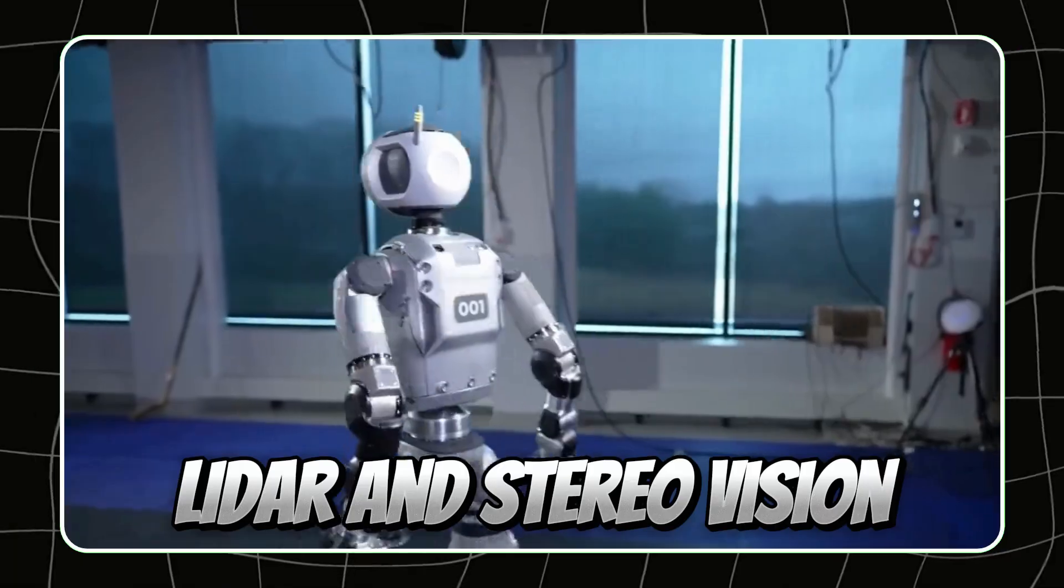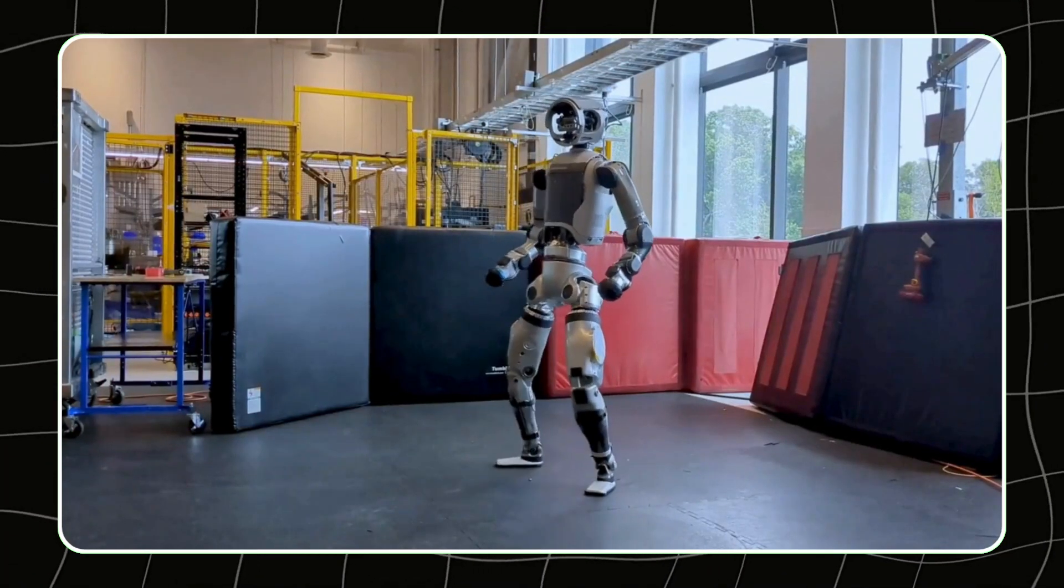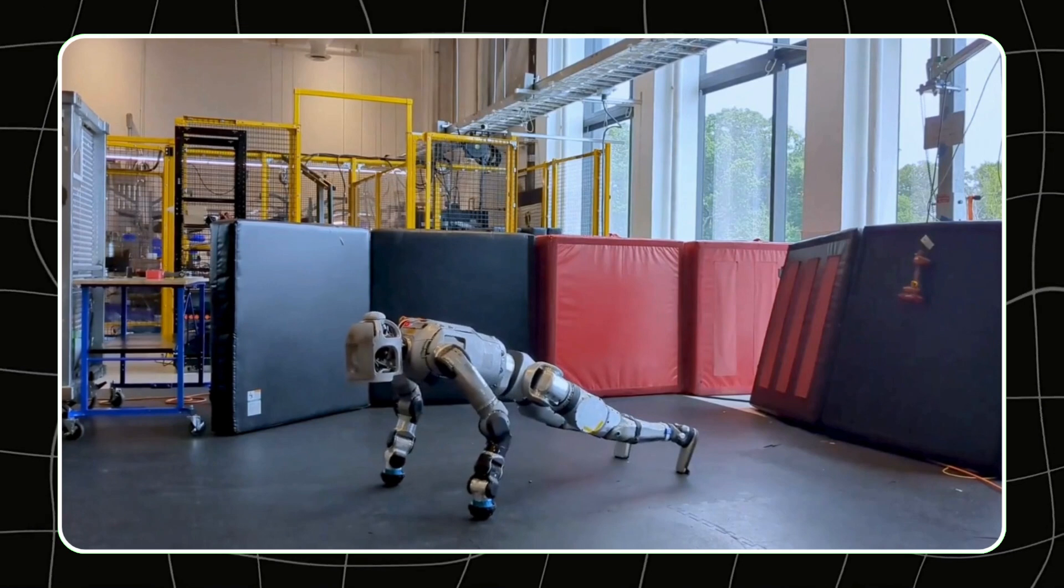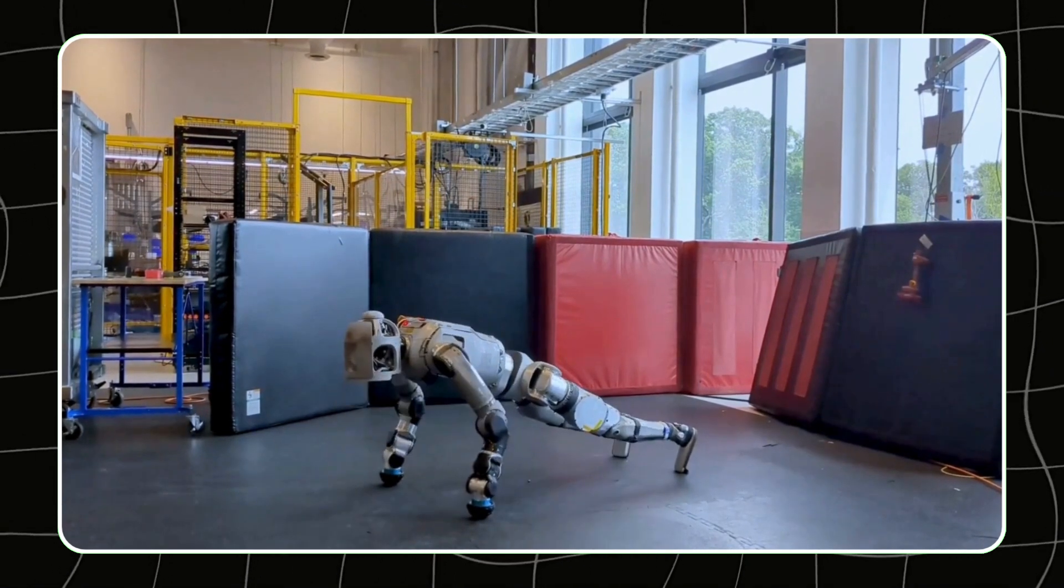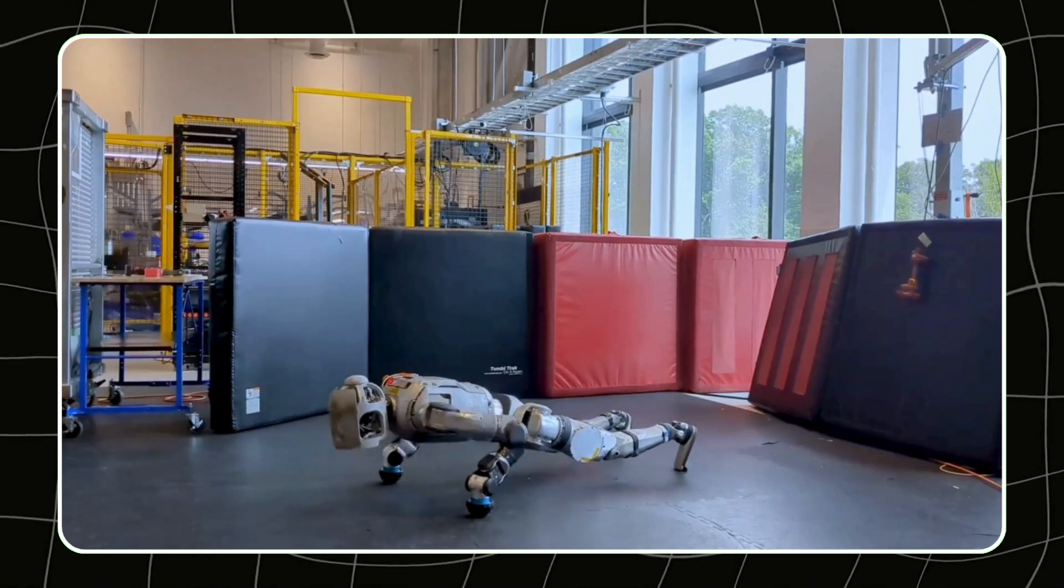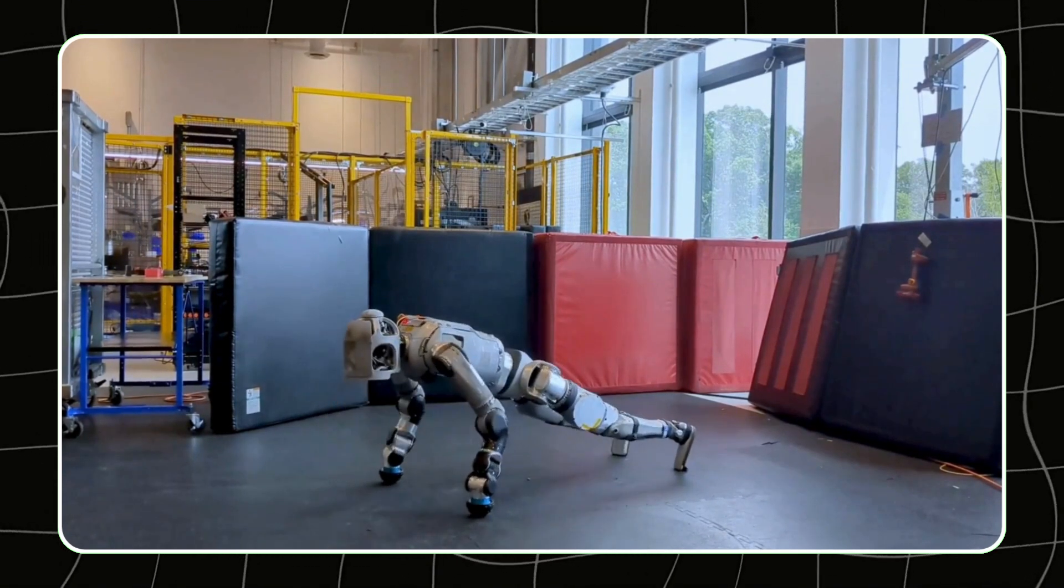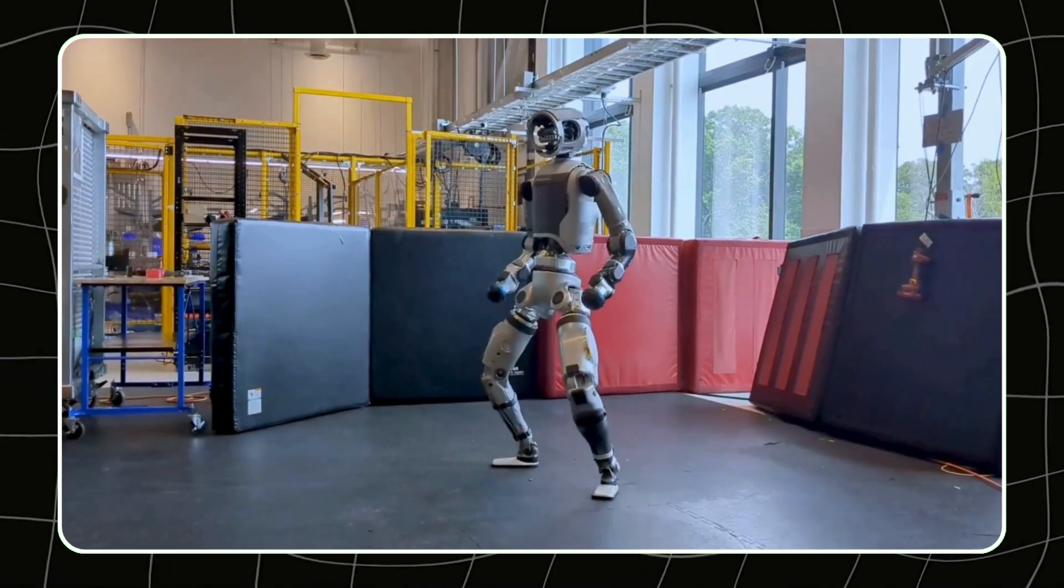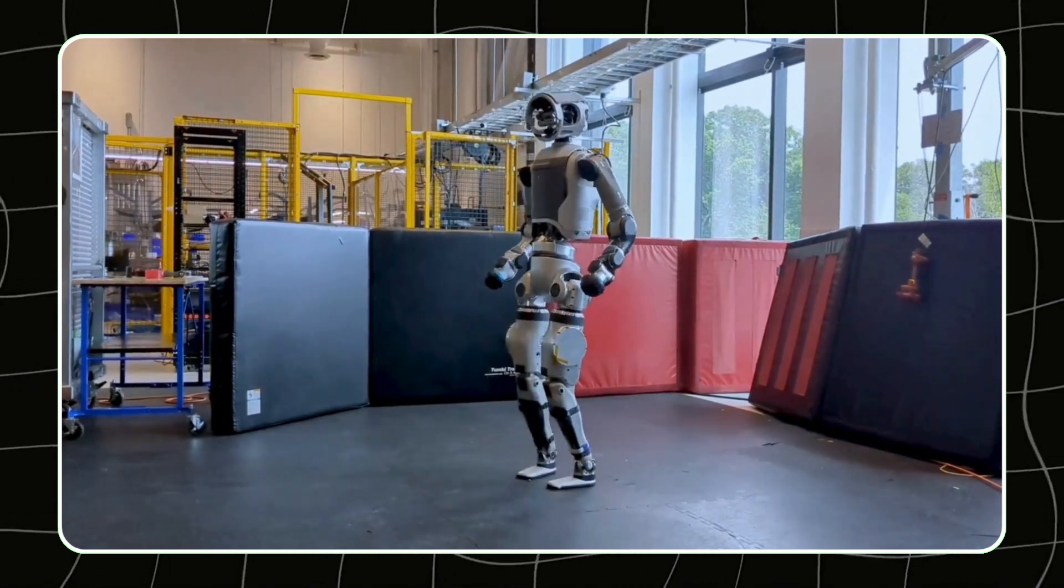Equipped with LiDAR and stereo vision, Atlas can navigate through dynamic environments, avoiding obstacles with grace and precision. Imagine a robot that can traverse rough terrain, climb stairs, and adapt to its surroundings in real time. Atlas is designed for tasks that require advanced mobility, making it invaluable in search and rescue missions or in environments where human safety is at risk.